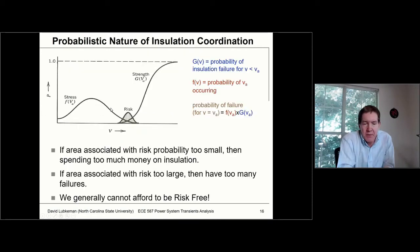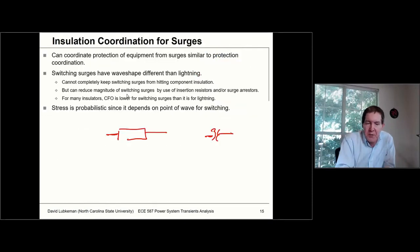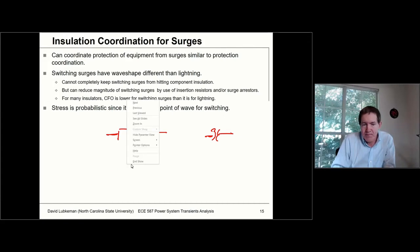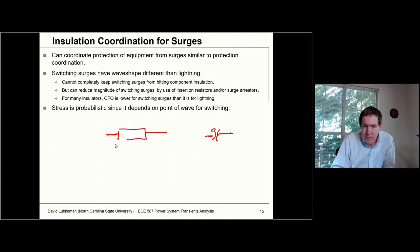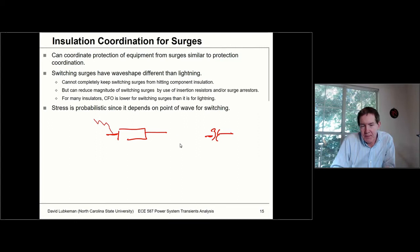Lightning could strike somewhere on the left on the overhead line, connected between the wire and ground.